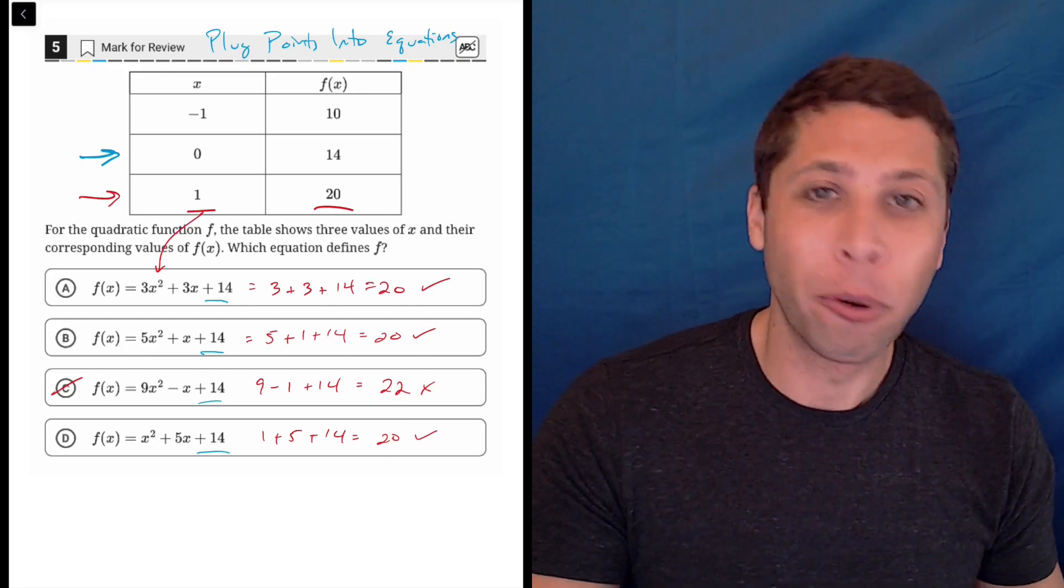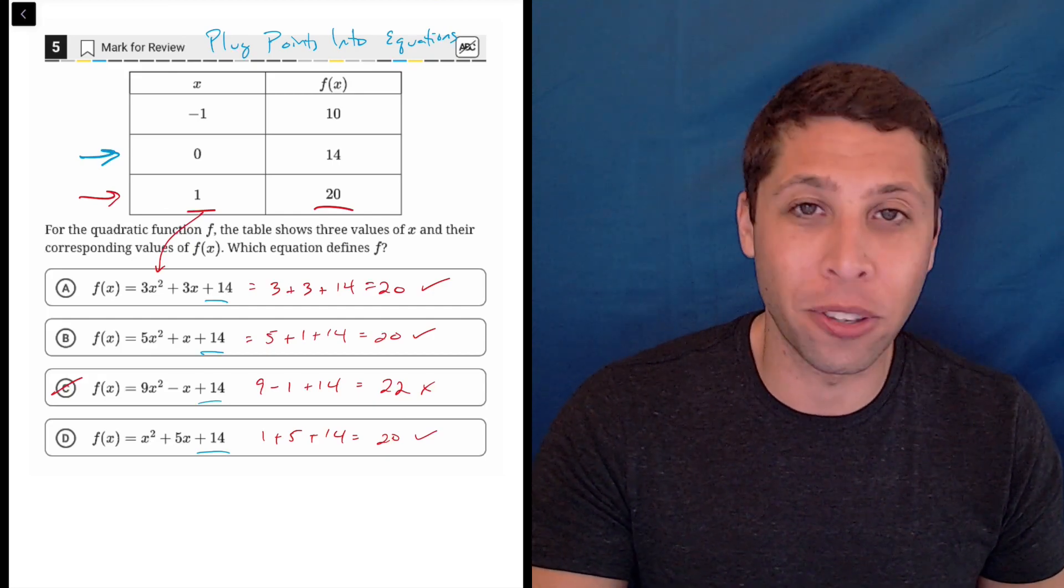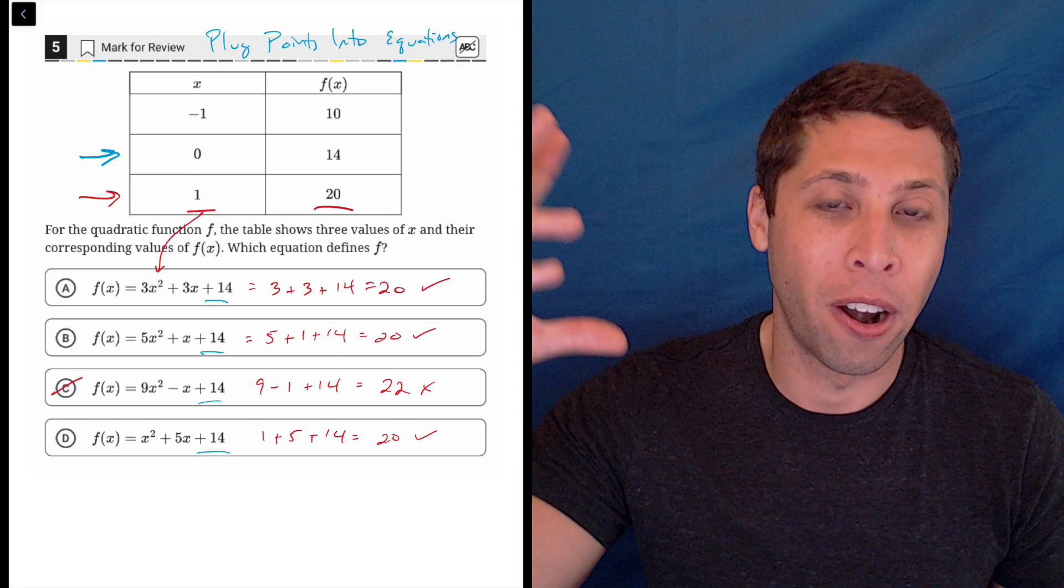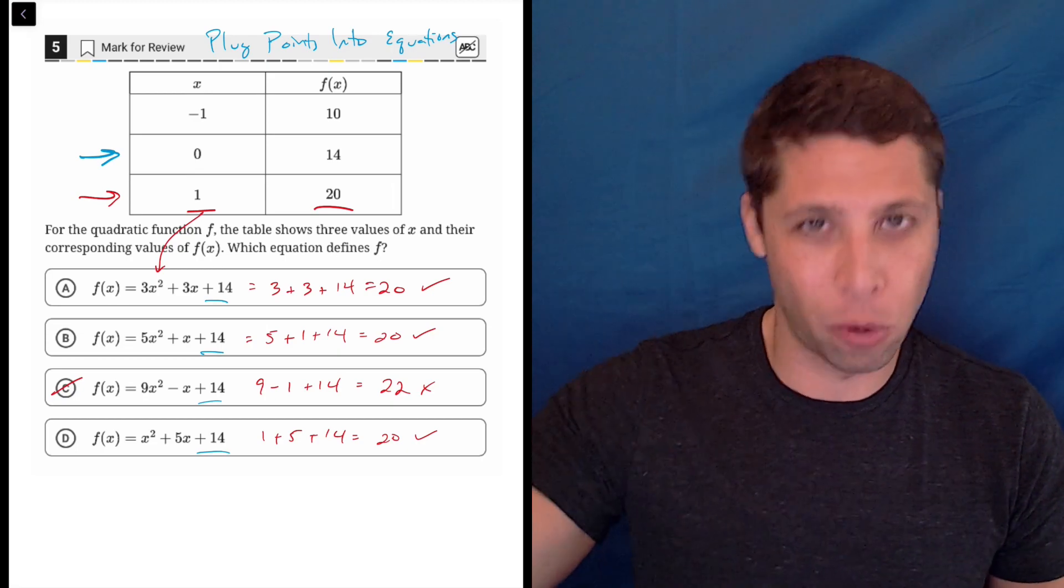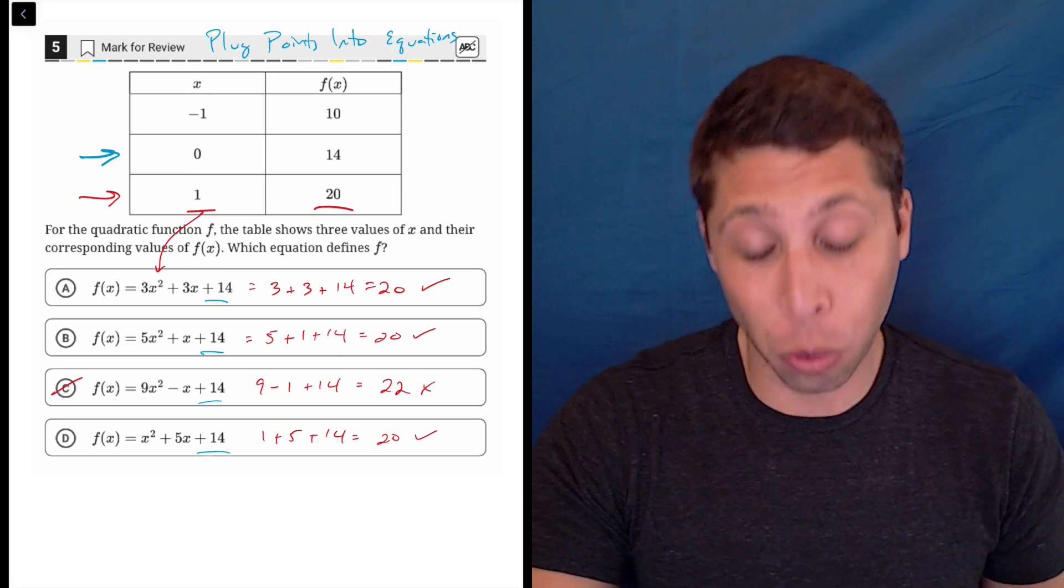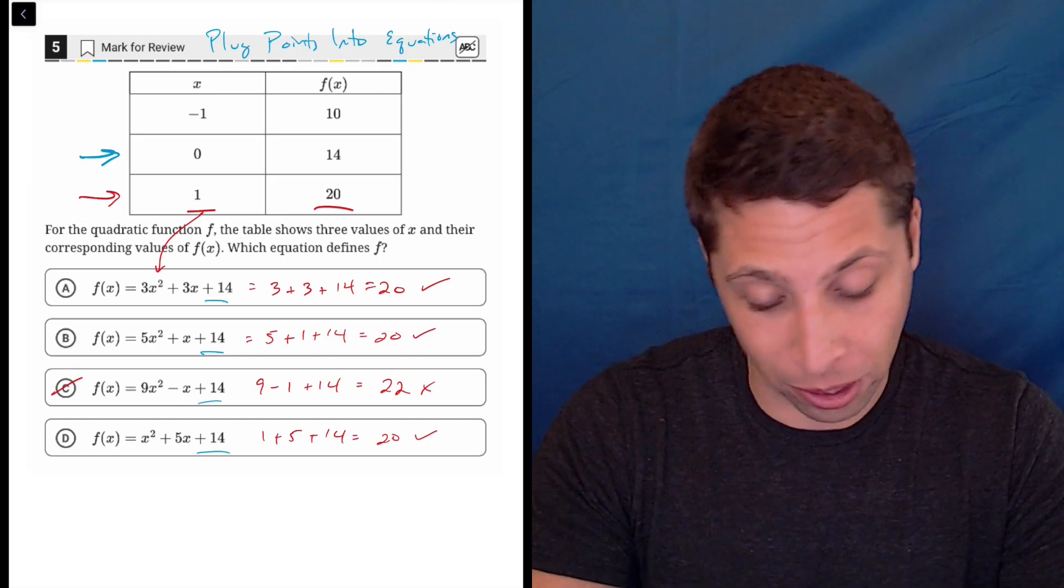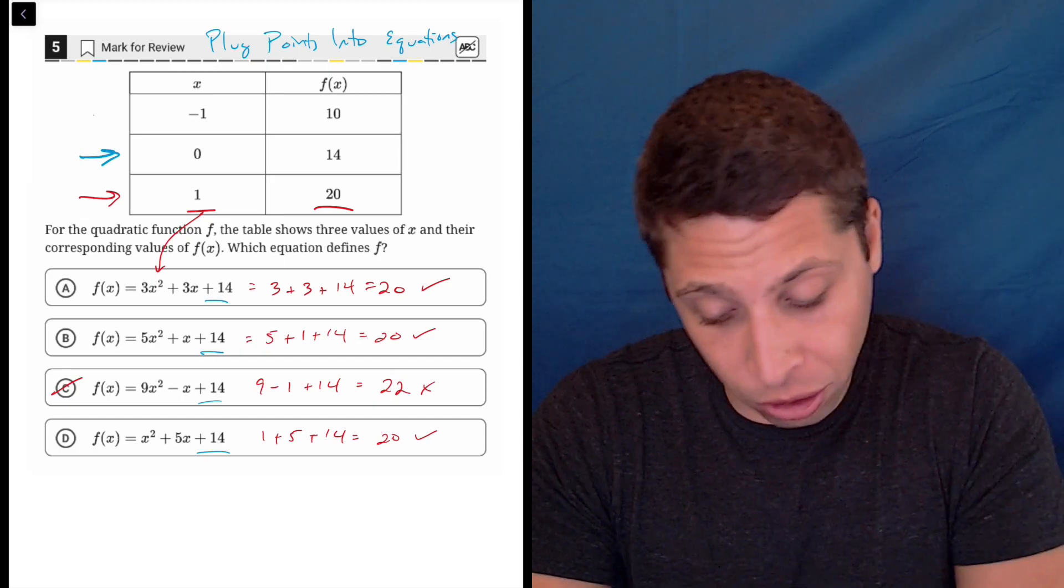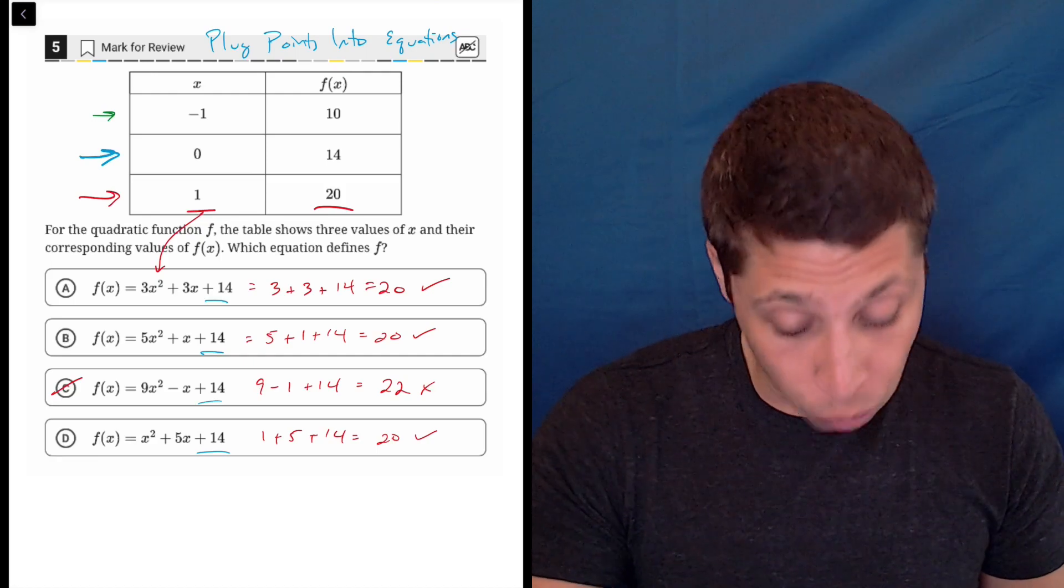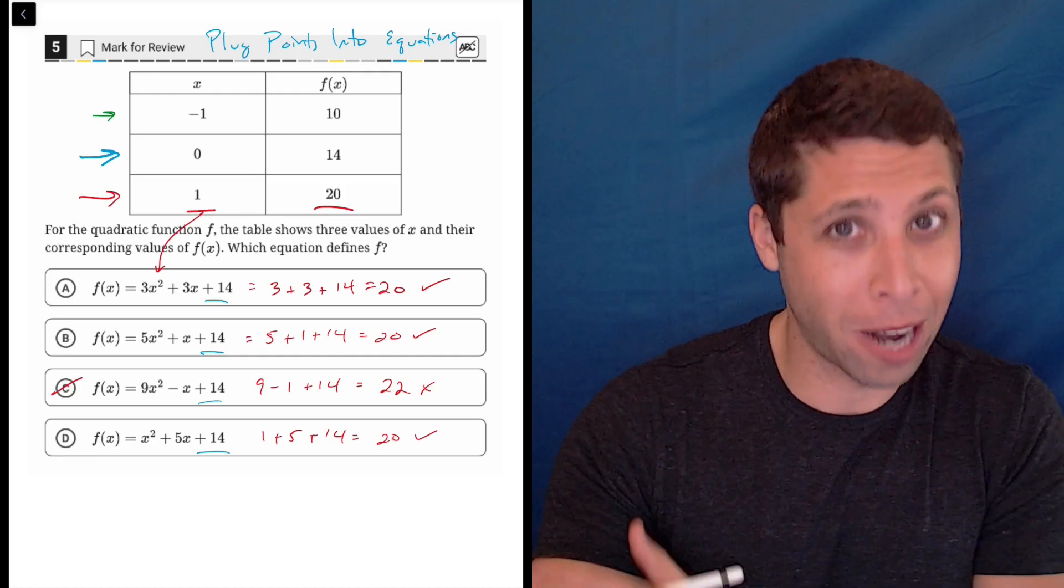Now that doesn't surprise me. We're in the hard module. The SAT likes to do this even on easier questions where a point is going to work in multiple equations. So we have to be really sure and just try every single choice. So the final step is then let's just do the final point, negative one. And this will work. There's no doubt because we're out of points otherwise.